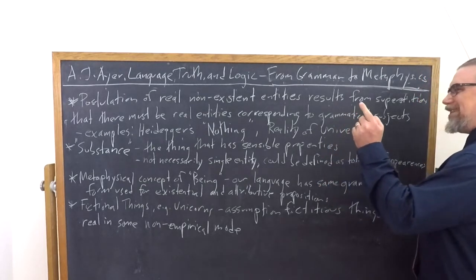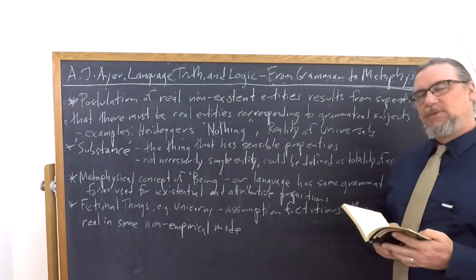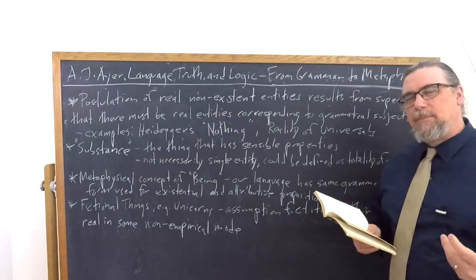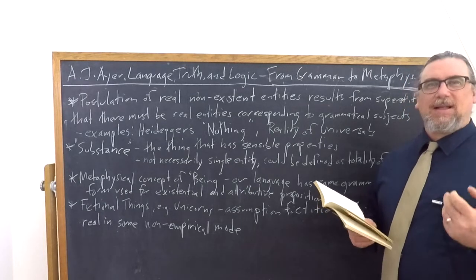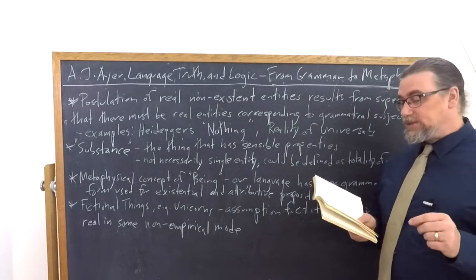So he says that we've got this idea of the thing that underlies the sensible properties. Why do we assume that? Because our language leads us into thinking that, but our language is seducing us, leading us astray.